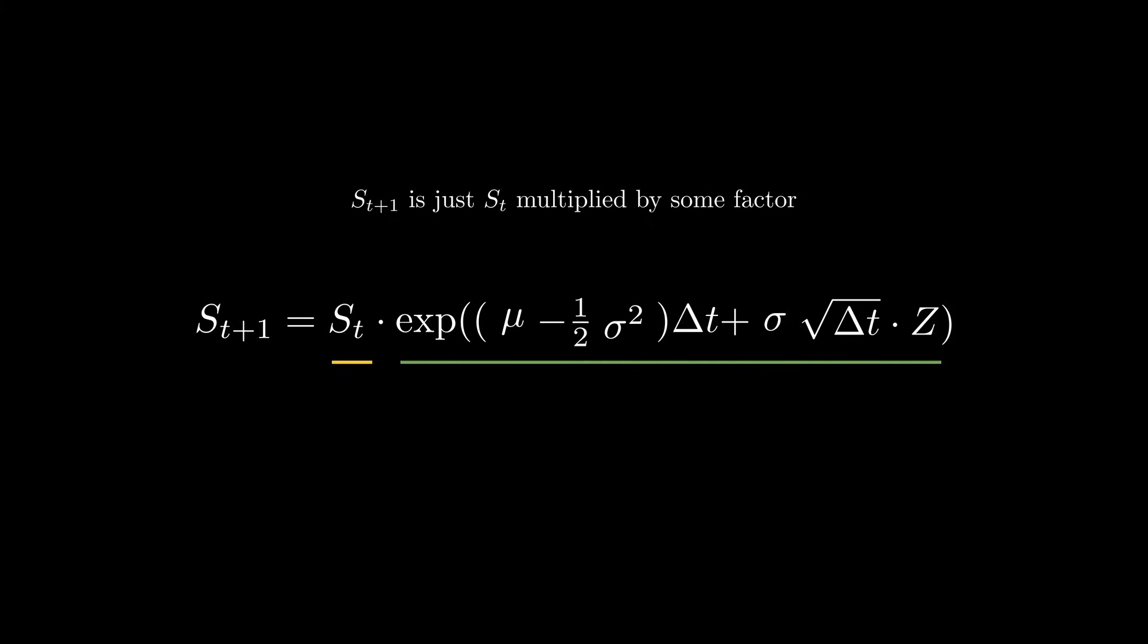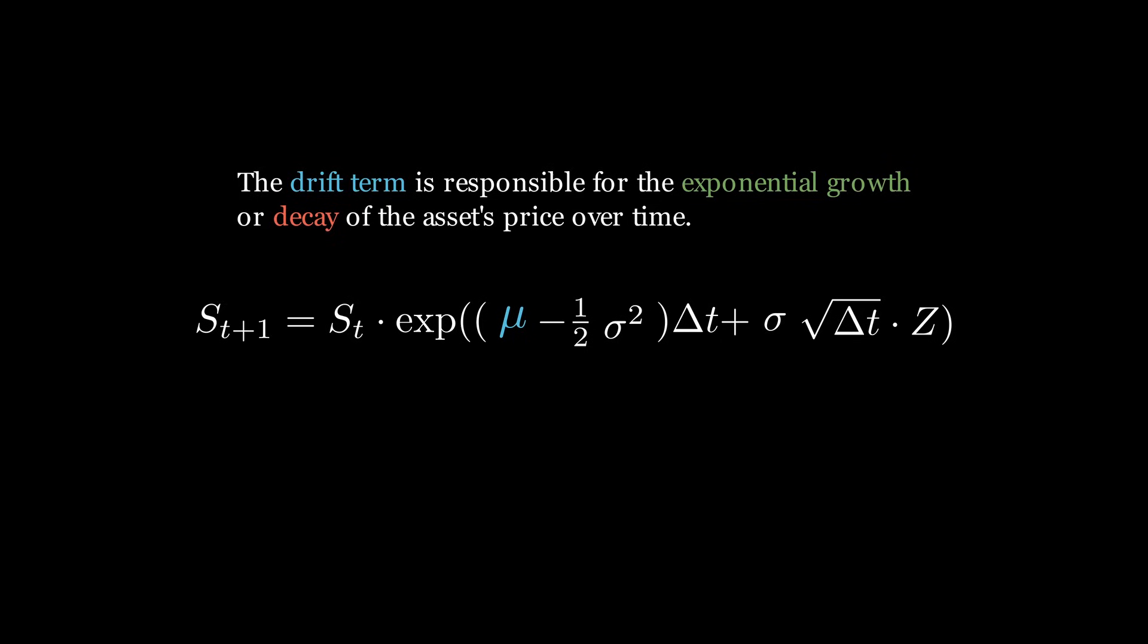There are two terms in this equation that matter. The first is the drift term. The drift term is responsible for the exponential growth or decay of the asset's price over time. Without the drift term, the expected value of the asset's price will remain constant over time.